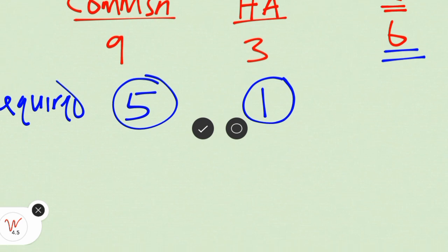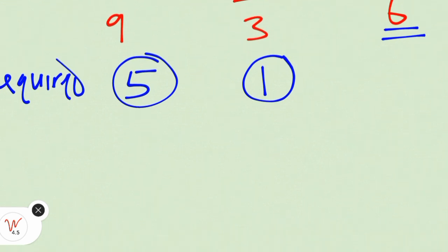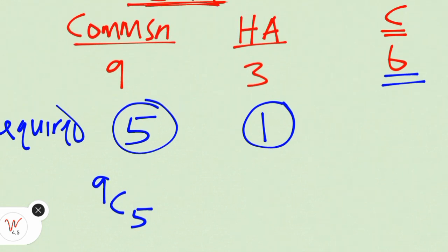So in how many ways can we select five people out of nine in total? That can be done using our formula which is nine combination five. And we want to select one out of three, which can be done in three combination one way.